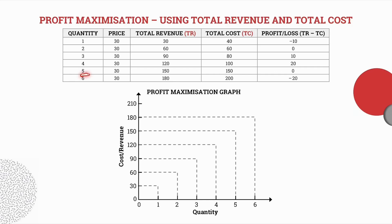At quantity 5, our total revenue is 150 rand and our total cost is also 150 rand, so again where total revenue equals total cost we have a break-even point. At quantity 6, our total revenue is 180 rand, our total cost is 200 rand, and a loss of 20 rand has been incurred.